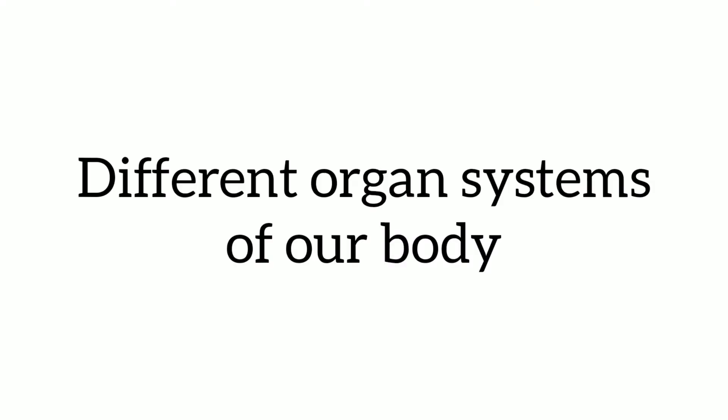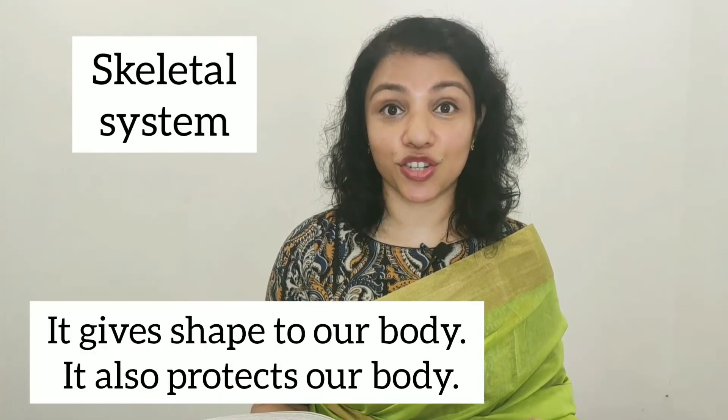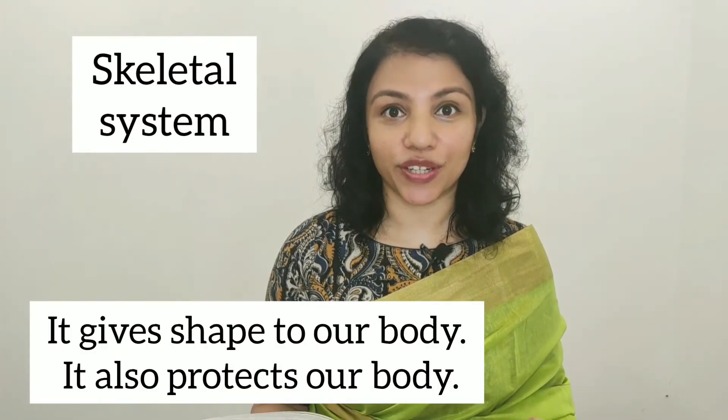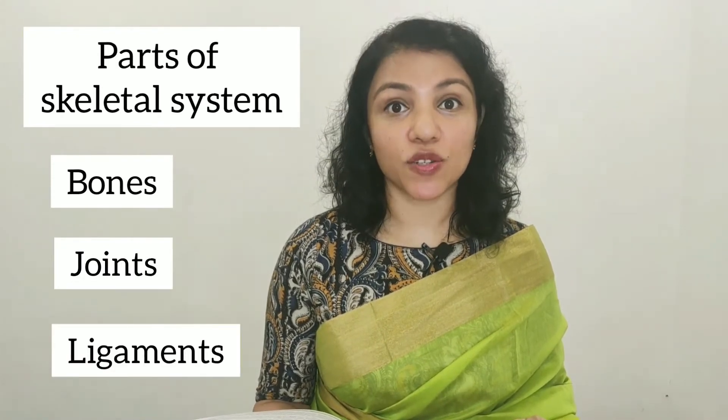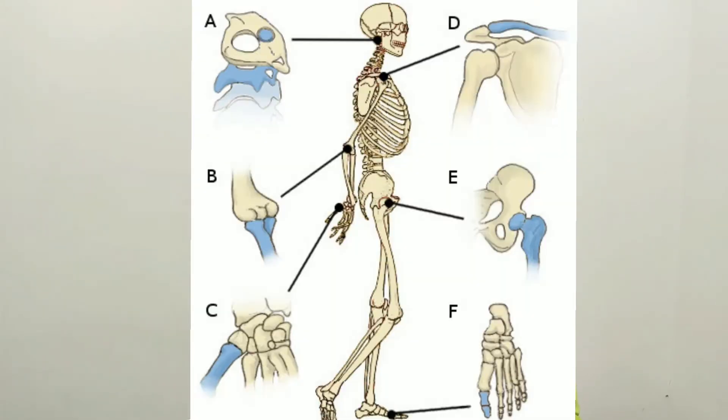Let's look at different body systems one by one. First, let's look at the skeletal system. This is the system that gives our body its shape and also protects our body. The parts of the skeletal system are bones, joints, and connecting tissues called ligaments. You can see in this picture how each part looks — bones, of course, we are very familiar with, and two bones join together at the joints.